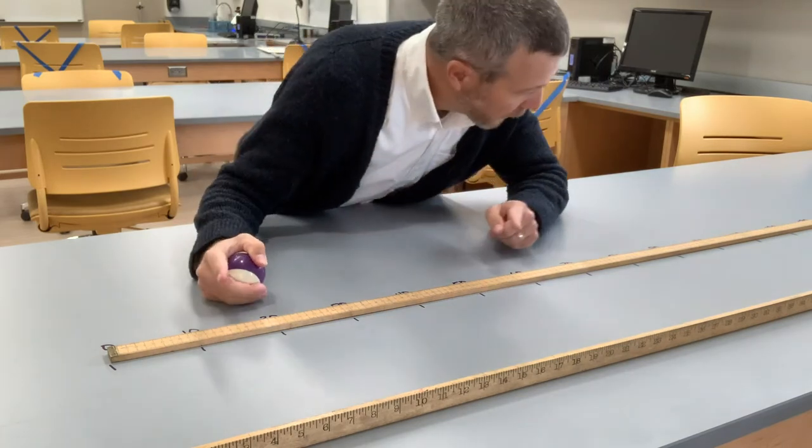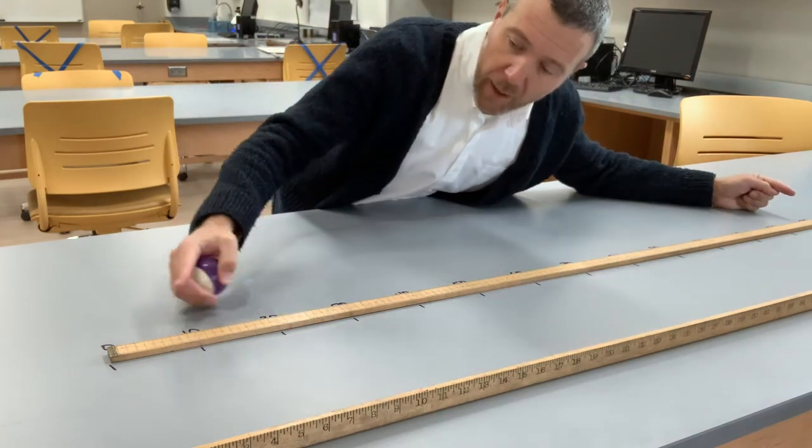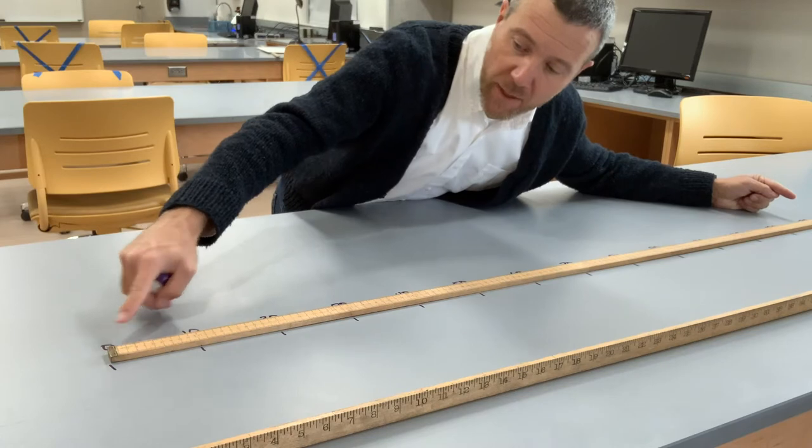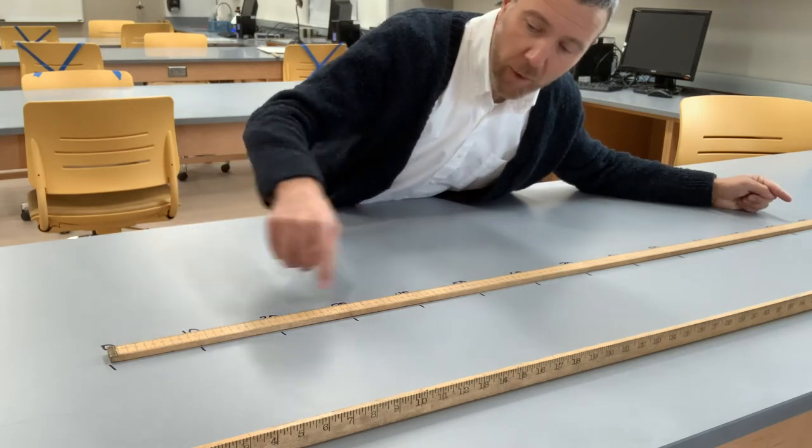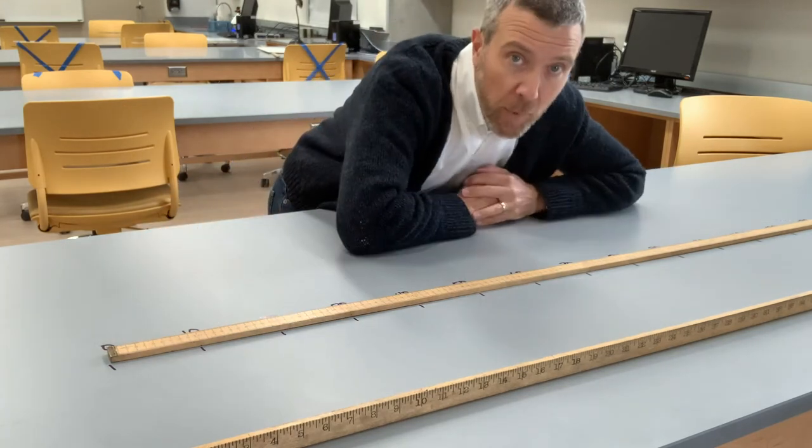I've put this meter stick on the table and I've marked out different centimeter marks: 0, 10, 20, 30, 40 little hash marks so you can see them.